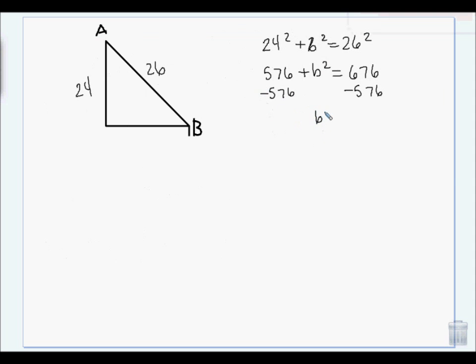Subtract 576 from both sides, and I get b squared is equal to 100. Take the square root, and b is 10. So this is 10. So the tangent of a is equal to opposite, which is 10, over adjacent, which is 24. So I'm going to get 10 divided by 24 is 0.4167. Tangent of b is opposite, which is 24, over adjacent, which is 10. So I'm going to get 2.4.